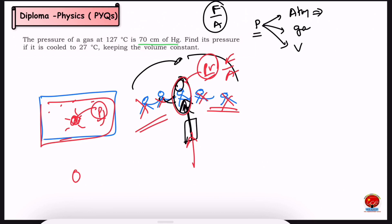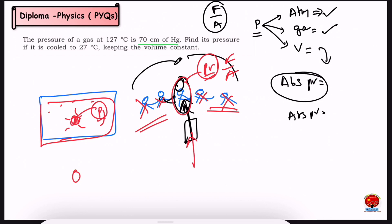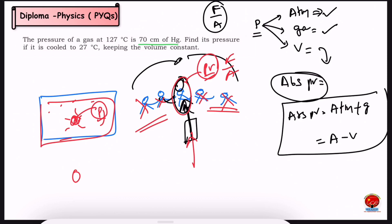Atmospheric pressure is the pressure exerted by the atmosphere. Gas pressure is the pressure above the atmosphere. Vacuum pressure is the pressure below the atmosphere. Absolute pressure is the pressure measured on the absolute scale: absolute pressure equals atmospheric pressure plus gas pressure, or atmospheric pressure minus vacuum pressure.